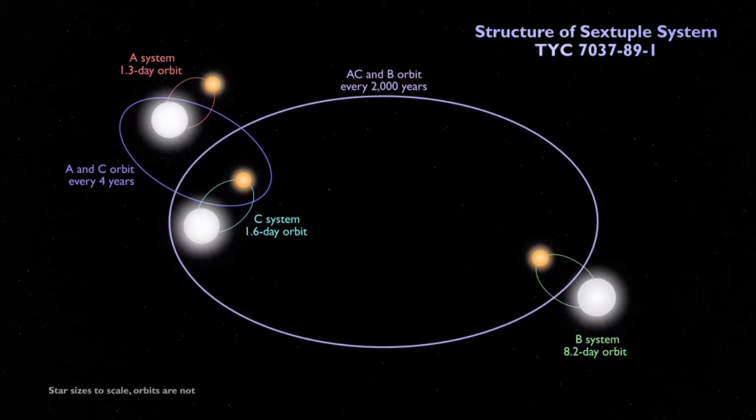All three pairs are eclipsing binaries. The orbits shown are not to scale. Credit: NASA's Goddard Space Flight Center.